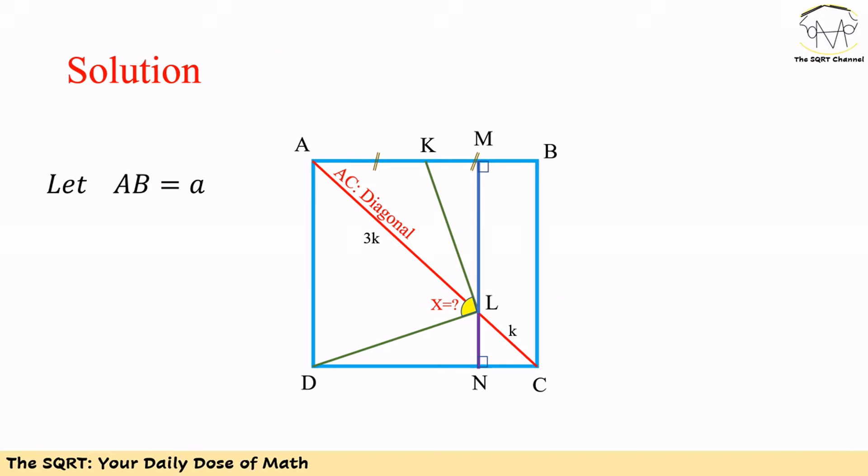To solve this problem we are going to use 'a' for the side of the square, so AB is equal to 'a'. We are also going to draw a line from L parallel to AD. This new line crosses AB at M and DC at N.